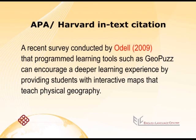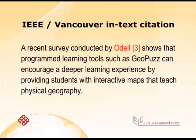Okay, here's an example of APA in-text citation. In-text means that the referencing is part of the essay. You can see here the author's surname and the year highlighted. And here is an example of IEEE in-text citation. Here, there is no year. Instead, each reference is represented by a number in square brackets.